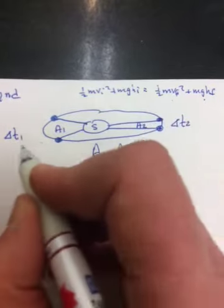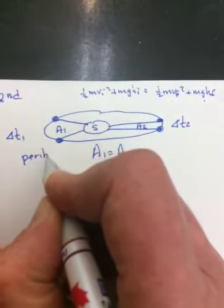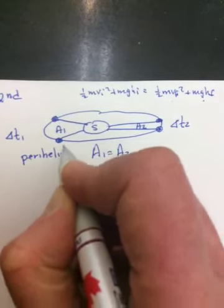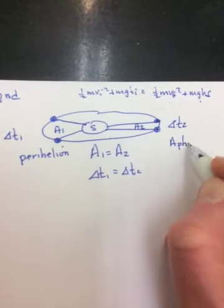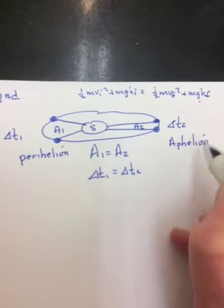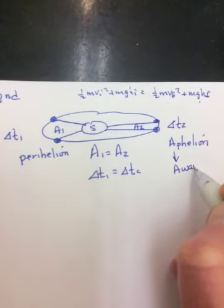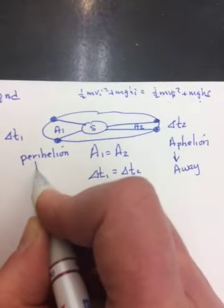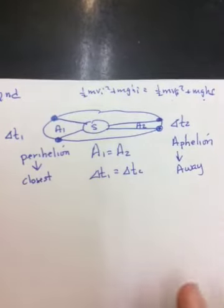The point when it's closest to the sun is called the perihelion, and the point that it's furthest from the sun is called the aphelion. And the way that you can remember it is, A goes with away. So when it's furthest away, it's at the aphelion. When it's closest, it's at the perihelion.